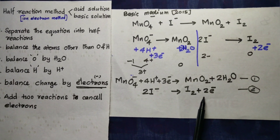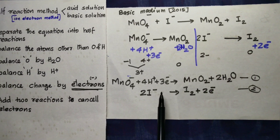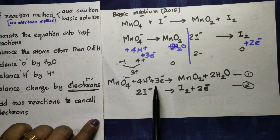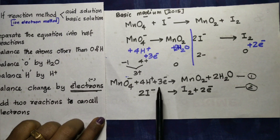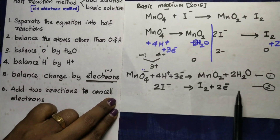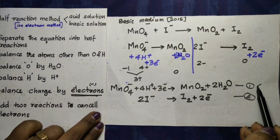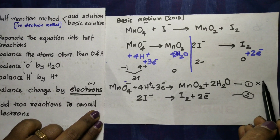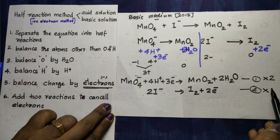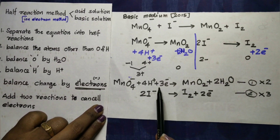So we have two different numbers of electrons. We will find a common number. We will give a multiplier of 3. This first equation is multiplied by 2, and this second equation is multiplied by 3. This gives us the same number of electrons.